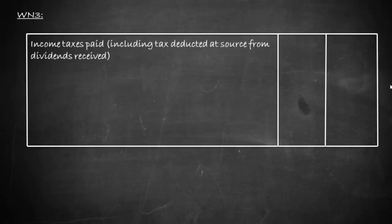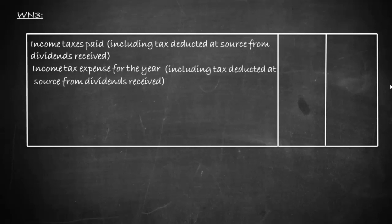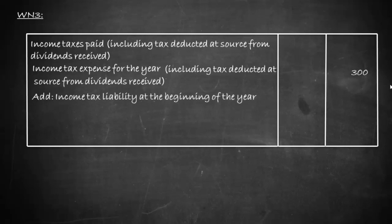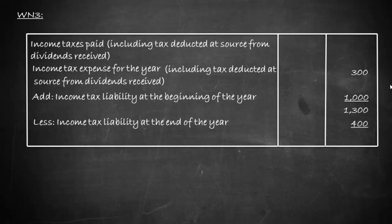Working Note 3 is for income tax paid including TDS on dividend. Income tax expense including TDS is 300. Opening income tax liability (from balance sheet) is 1,000; closing income tax liability is 400. Net income tax paid during the year is 900. This is split: 40 is TDS on dividend classified under investing activity, and the remaining 860 relates to operating profit, shown under operating activity.